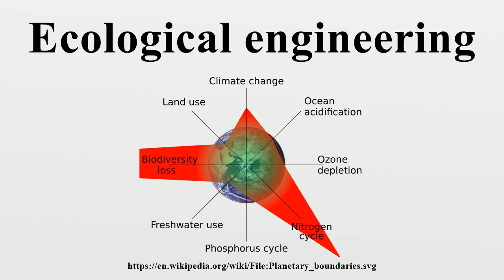Ecological engineering design follows a cycle similar to engineering design: problem formulation, problem analysis, alternative solutions search, decision among alternatives, and specification of a complete solution. Elements that distinguish ecological engineering design are elaborated by many authors, though a singular approach is still absent. Typically, the design goal involves protecting an at-risk ecosystem, restoring a degraded ecosystem, or creating a new sustainable ecosystem to satisfy needs of both nature and society.